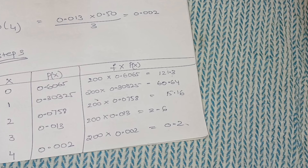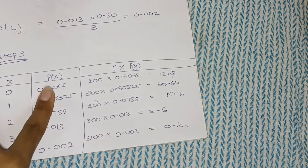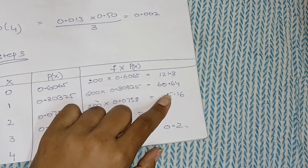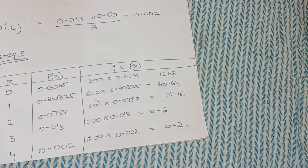To summarize: Step 1 — find lambda. Step 2 — use the Poisson distribution table to find e^(−m), and calculate P(0), P(1), P(2), P(3), P(4). Step 3 — prepare the final table with x, P(x), and f × P(x) columns, where f = 200. Adding 121.3 + 60.64 + 15.16 + 2.60 + 0.2 gives 200. That is Poisson distribution.